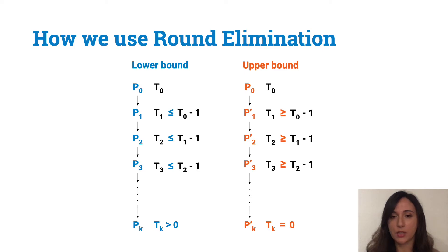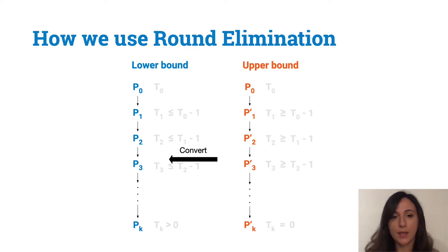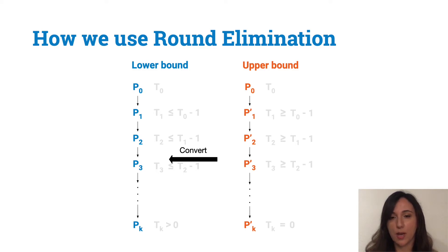So how do we use the round elimination technique to show our lower bounds? We noticed that while it was really challenging to directly obtain a lower bound sequence for ruling sets using round elimination, it was easier to obtain an upper bound sequence for these problems. The high level idea is to first provide a good upper bound sequence for ruling sets, and then show a way to convert this upper bound sequence into a lower bound one. The lower bound we obtain does not match the upper bound, but we still manage to keep the length of the lower bound sequence long enough to give useful results. In the remaining of the talk, we will see some details about the upper bound sequence of problems.